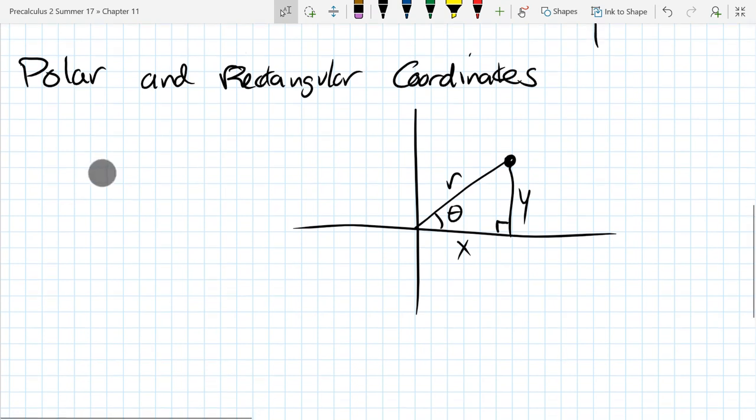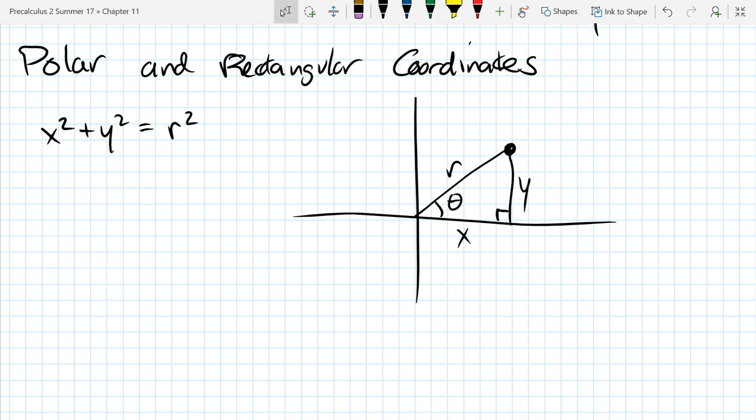So here we go. Let's start with Pythagorean theorem first: x² + y² = r². So you probably knew that one before you got here—Pythagorean theorem. Now we're going to go with the three trig relationships. We'll go with cosine first. Cosine is adjacent over hypotenuse, x over r.